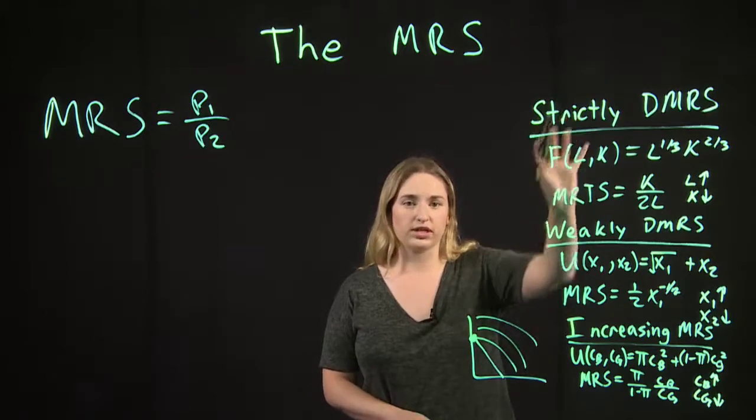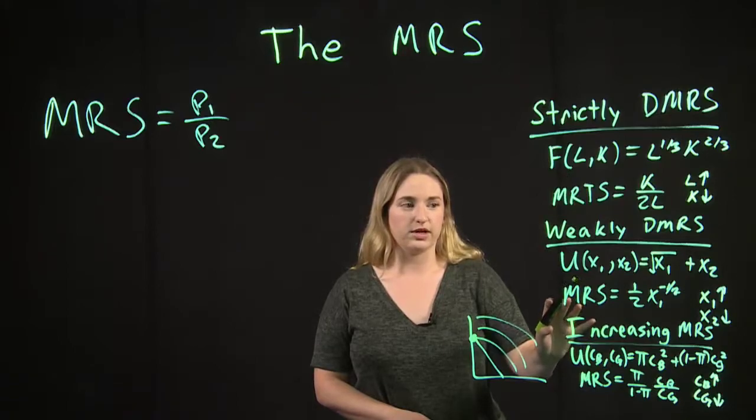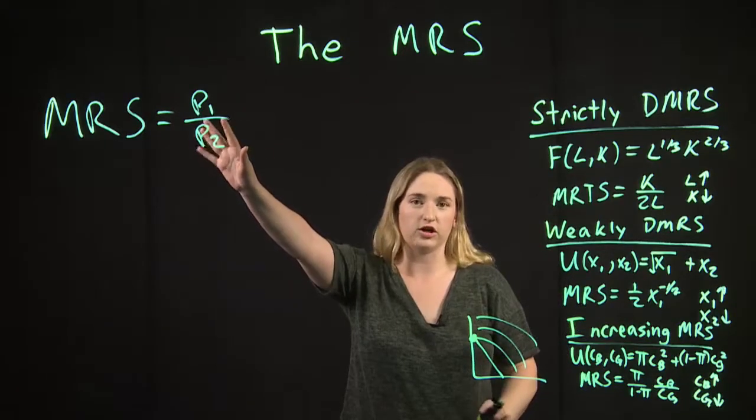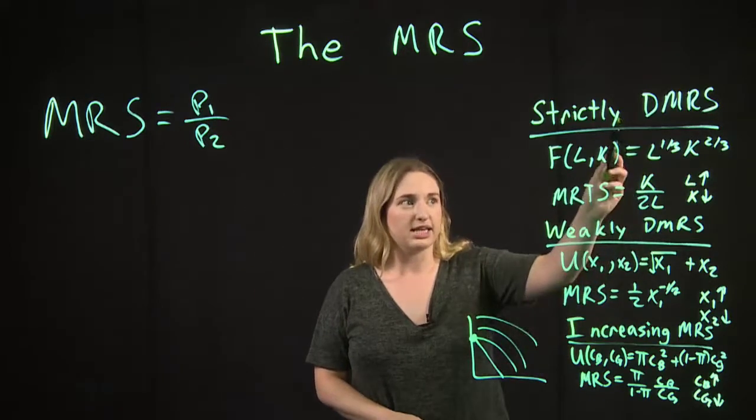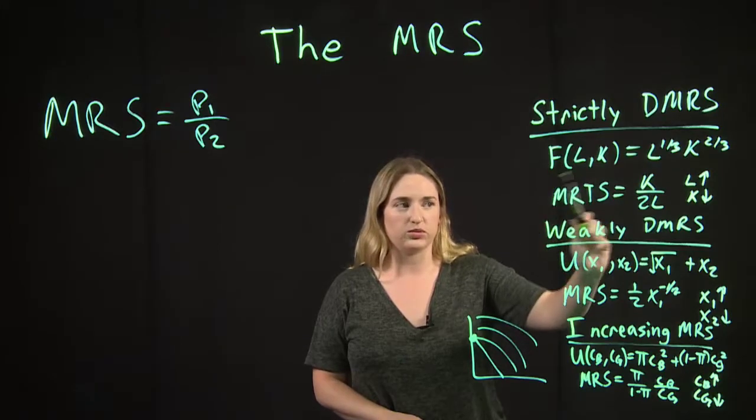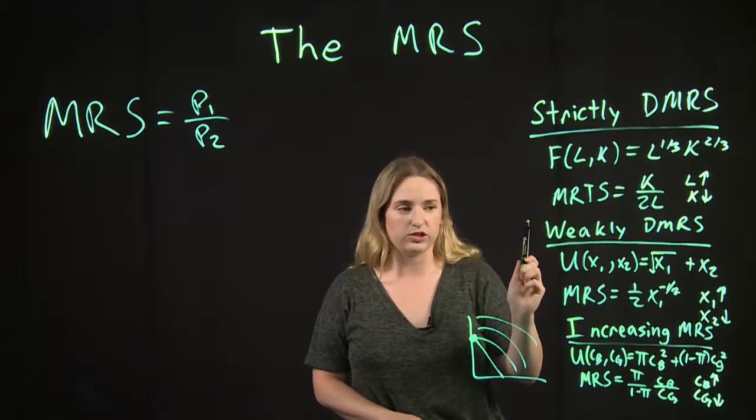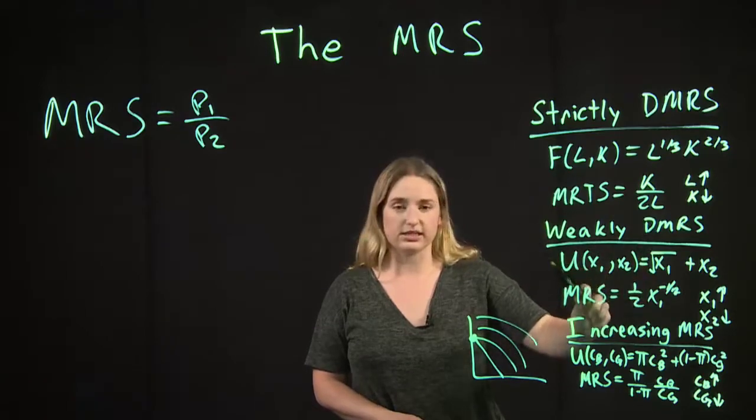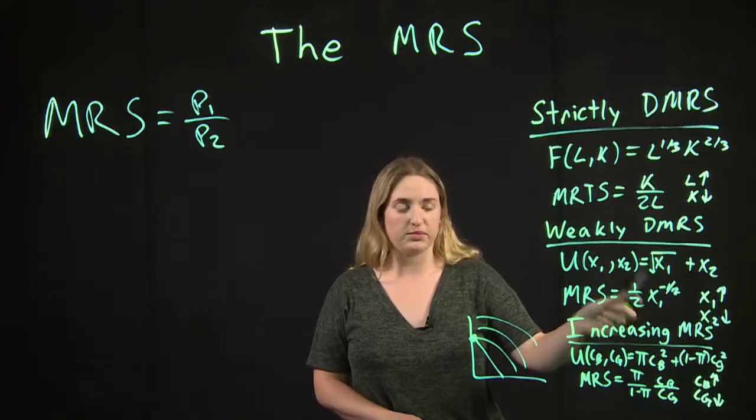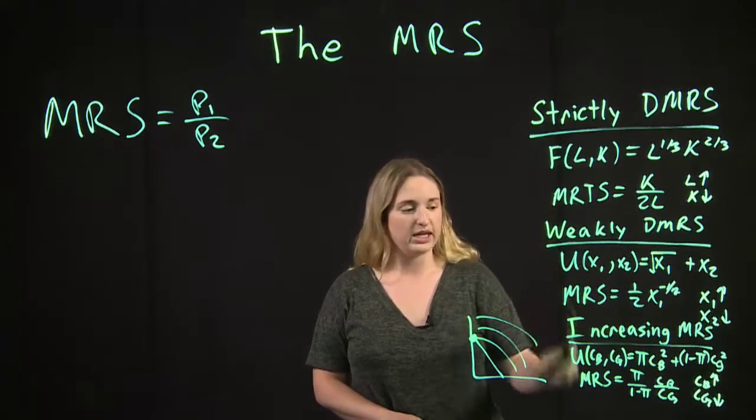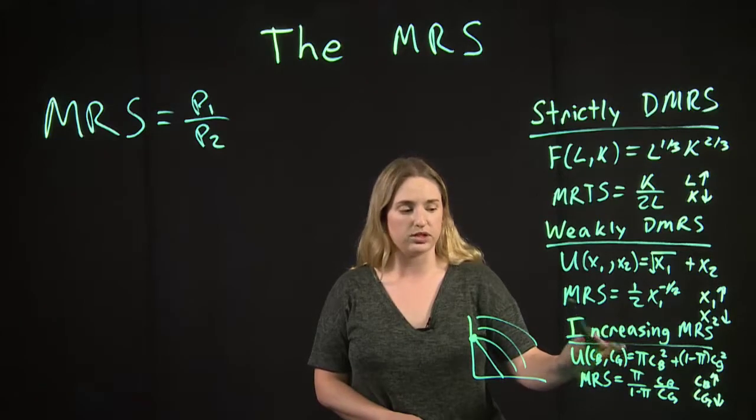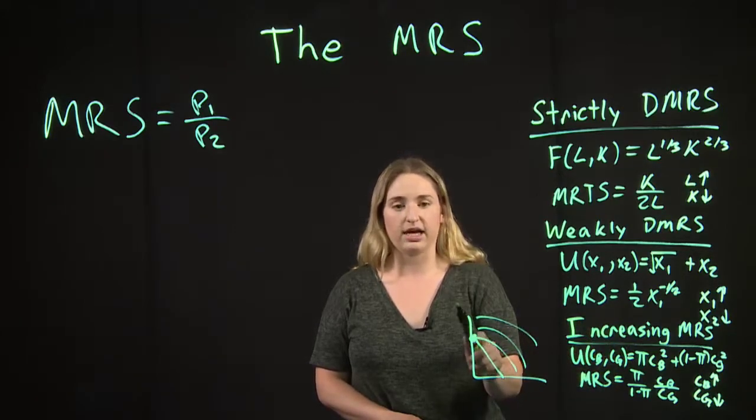So these are the three different cases when you can and cannot use the marginal rate of substitution equal to the price ratio, which we could call Gossen's second law. So in this case when we have a strictly diminishing MRS we can definitely set the marginal rate of substitution equal to the price ratio to get our optimal solution. In this case we can sometimes set the marginal rate of substitution equal to the price ratio to get the optimal solution but a corner case also exists. In this case with an increasing MRS we can never set the marginal rate of substitution equal to the price ratio because we have a corner solution.